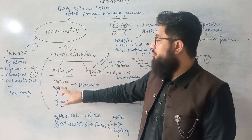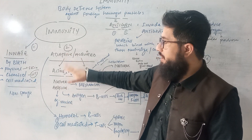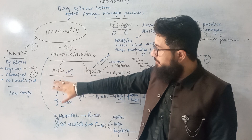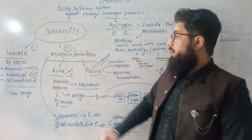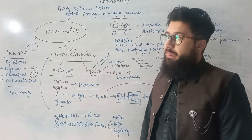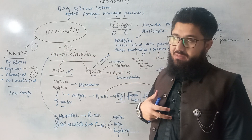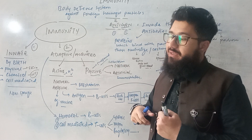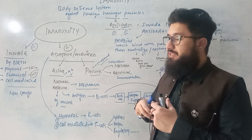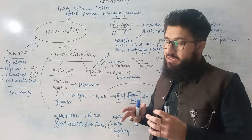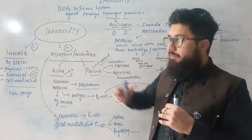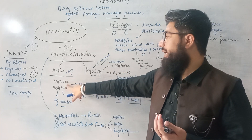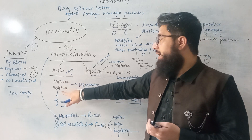Both active and passive immunity have natural and artificial subtypes. Active natural means that naturally, antigens from outside enter the body, our body fights them, makes antibodies, and becomes immune. Our body actively produces antibodies in response to a live antigen encountered naturally in the environment.